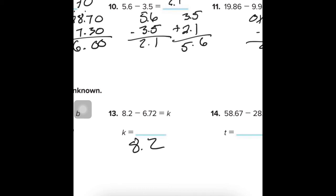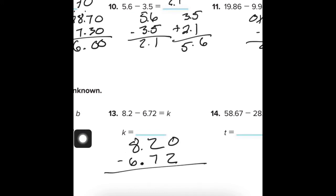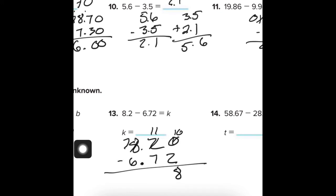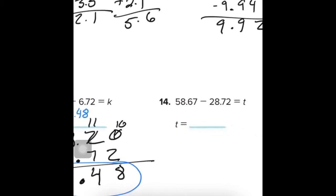Next problem: 8.2 minus 6.72. I need a placeholder zero. I cannot take 2 from 0, so I borrow — that turns into 10, making the next digit 8. I cannot take 7 from 1, so again I borrow, turning that into 7 and this into 11. There are 4 in between. Bring down the decimal. 7 minus 6 is 1. The answer is 1.48.